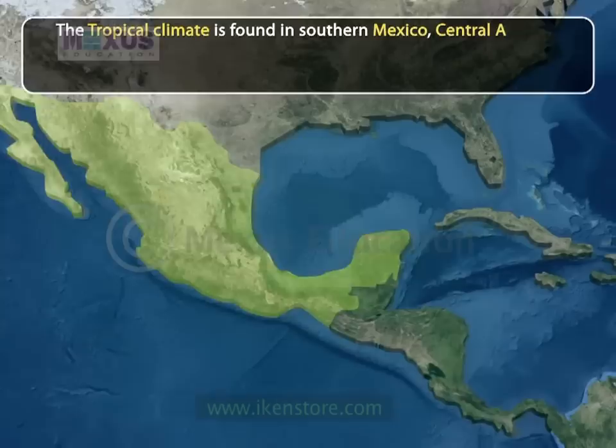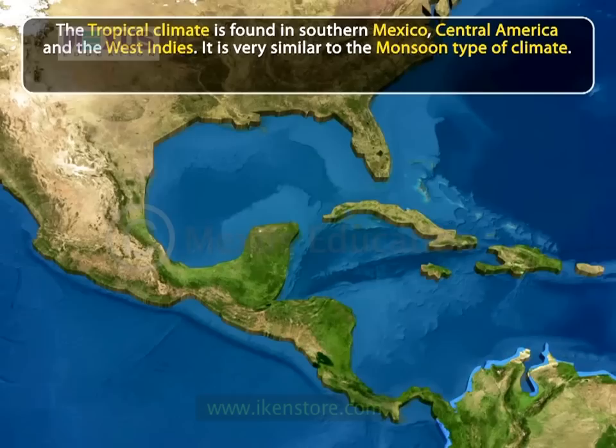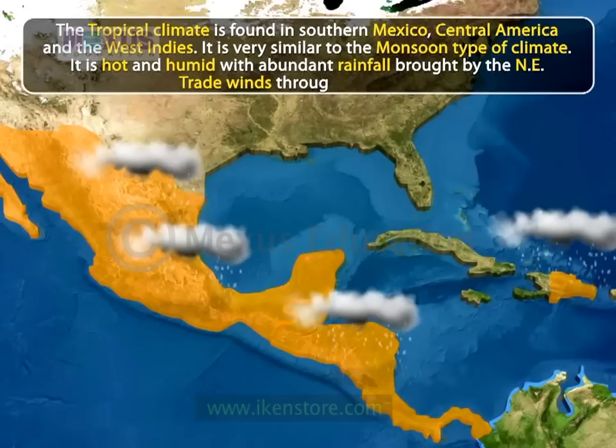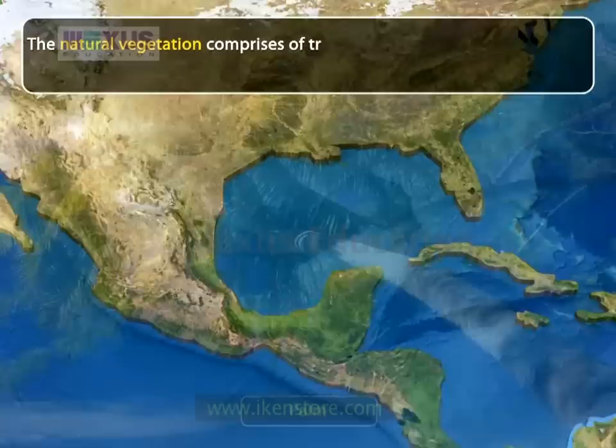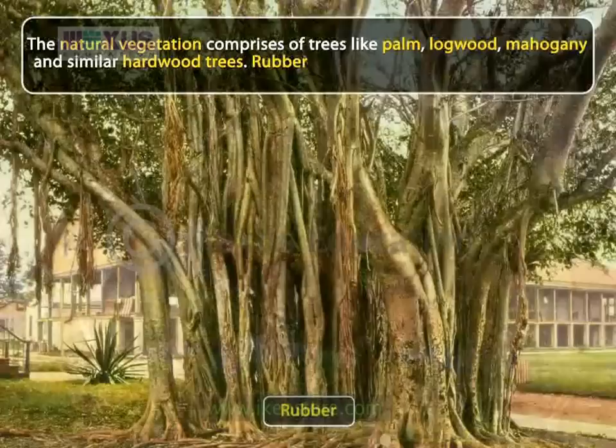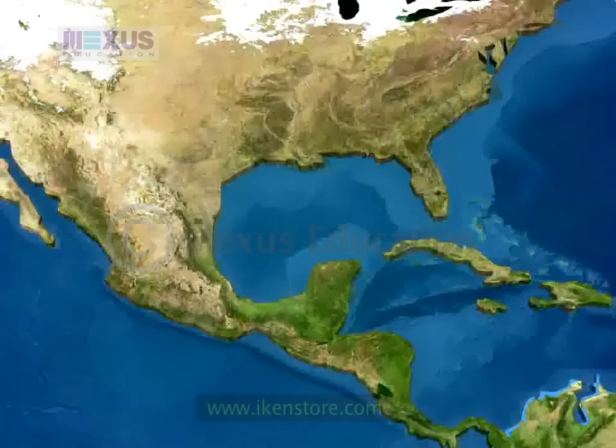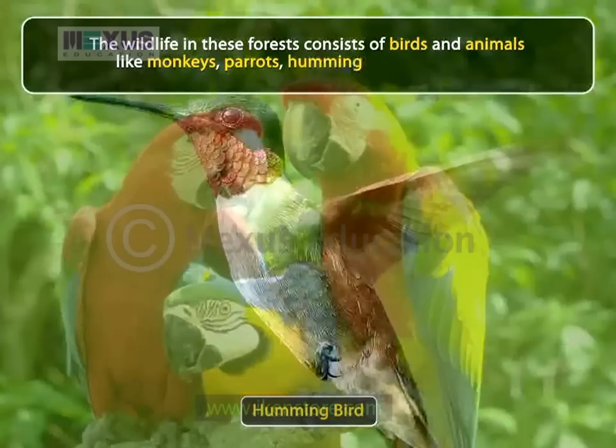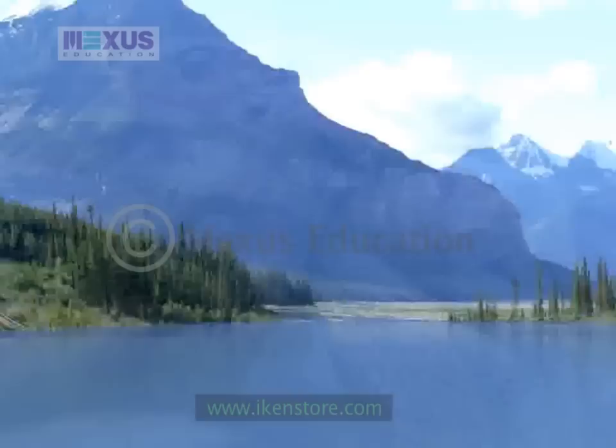The tropical climate is found in southern Mexico, Central America and the West Indies. It is very similar to the monsoon type of climate — hot and humid with abundant rainfall brought by the northeastern trade winds throughout the year. The natural vegetation comprises trees like palm, logwood, mahogany and similar hardwood trees. Rubber and cacao are native to this region. The wildlife in these forests consists of birds and animals like monkeys, parrots, hummingbirds and snakes.